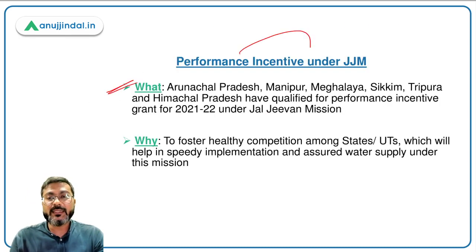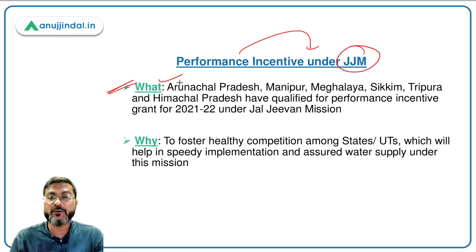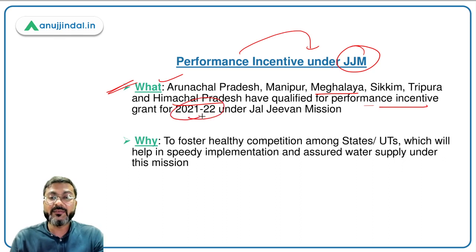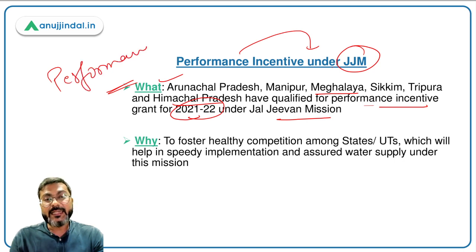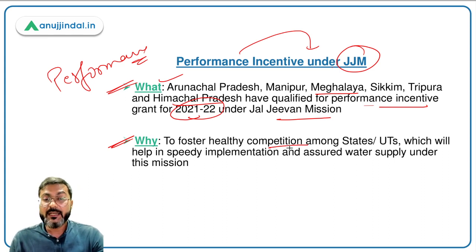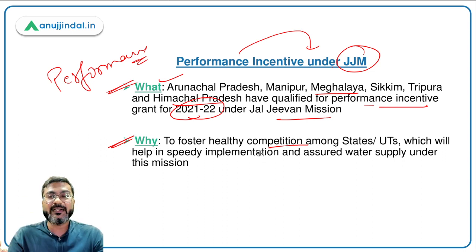The six states that have received performance incentives under Jal Jivan Mission are: Arunachal Pradesh, Manipur, Meghalaya, Sikkim, Tripura, and Himachal Pradesh. All these states qualified for the performance incentive grant for the previous financial year due to their exceptional performance in providing tap water connections in rural areas. The objective of giving this incentive is to foster healthy competition among all states and UTs for speedy implementation of the mission.